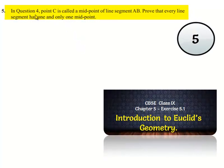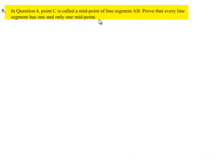Moving on to fifth question, in question number 4, point C is called midpoint of line segment AB. Prove that every line segment has one and only one midpoint.